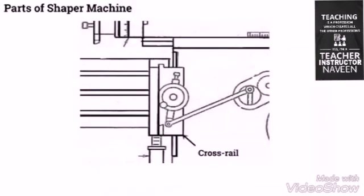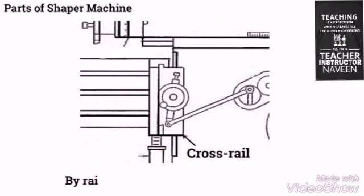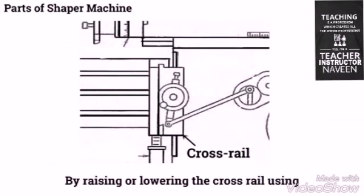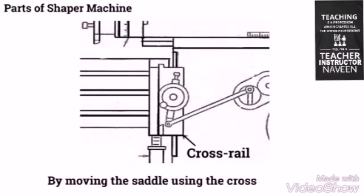The Cross Rail is mounted on the front vertical surface of the column. The vertical movement is given to the table by raising or lowering the cross rail using the elevating screw. The horizontal movement is given to the table by moving the saddle using the cross feed screw.